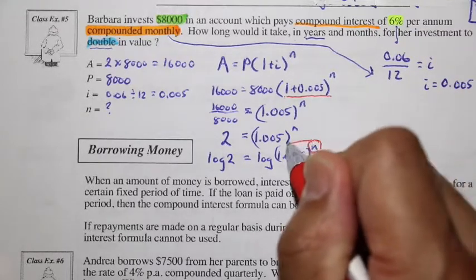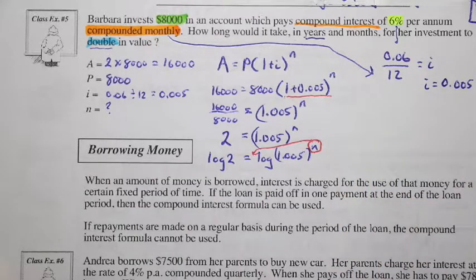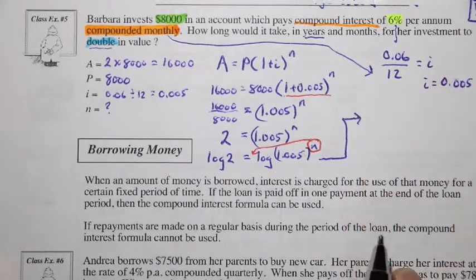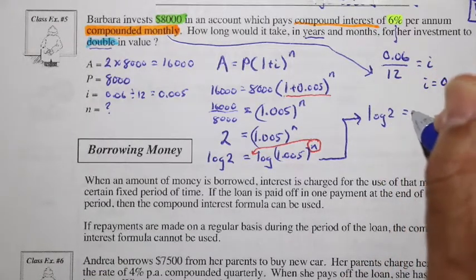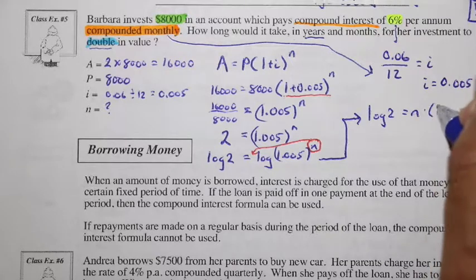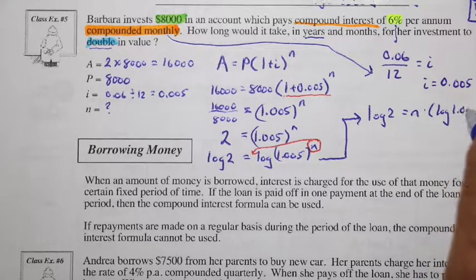And noticing that we can use our power rule of logs here, that exponent in the argument can come down to become a coefficient. And so here, we get log 2 is equal to n times log of 1.005.